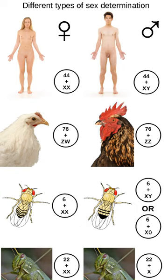Some species have a gene SRY on the Y chromosome that determines maleness. Members of SRY-reliant species can have uncommon XY-chromosomal combinations such as XXY and still live. Human sex is determined by the presence or absence of a Y chromosome with a functional SRY gene. Once the SRY gene is activated, cells create testosterone and anti-Müllerian hormone, which typically ensures the development of a single male reproductive system.